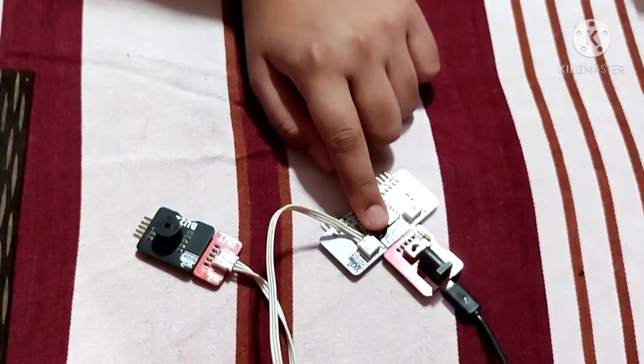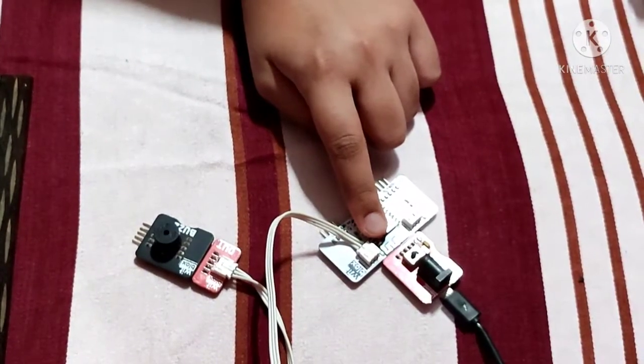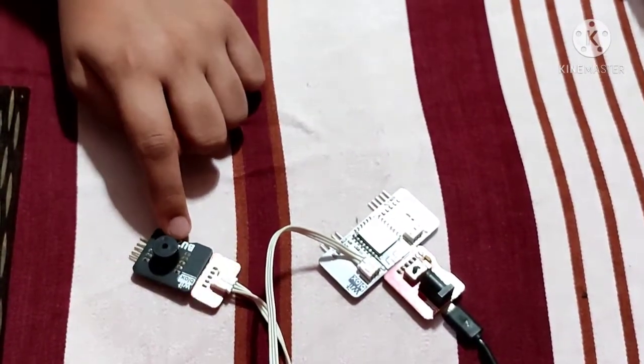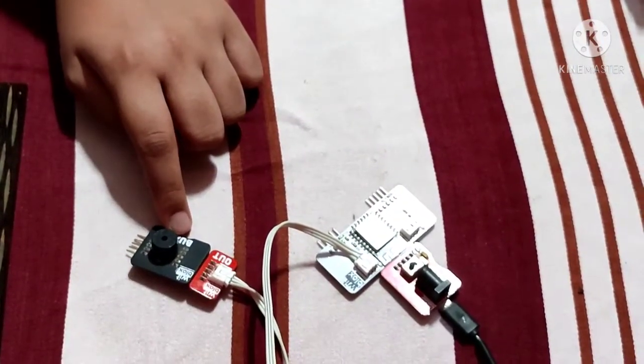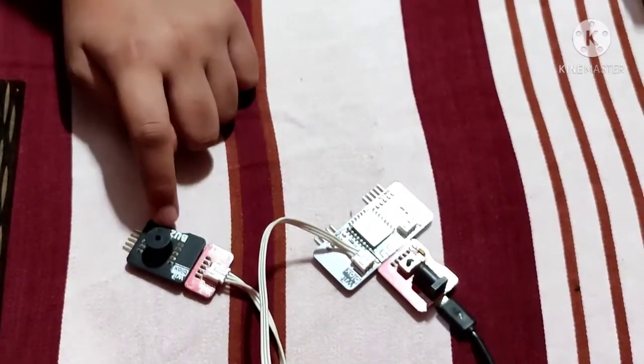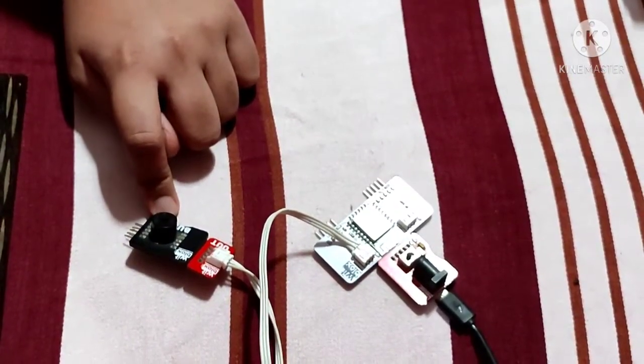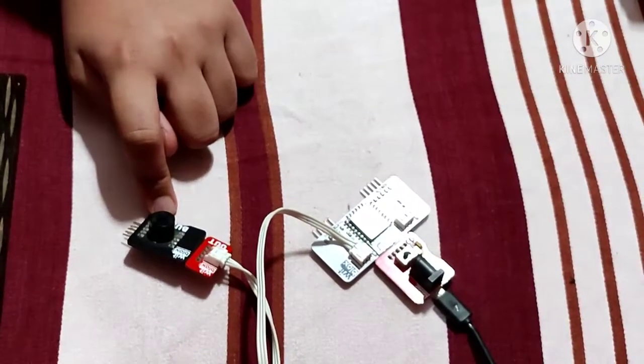So once the AI detects that the medal is stolen, it will trigger this buzzer which is connected here to the output, and then it will alarm the people around to catch the thief.